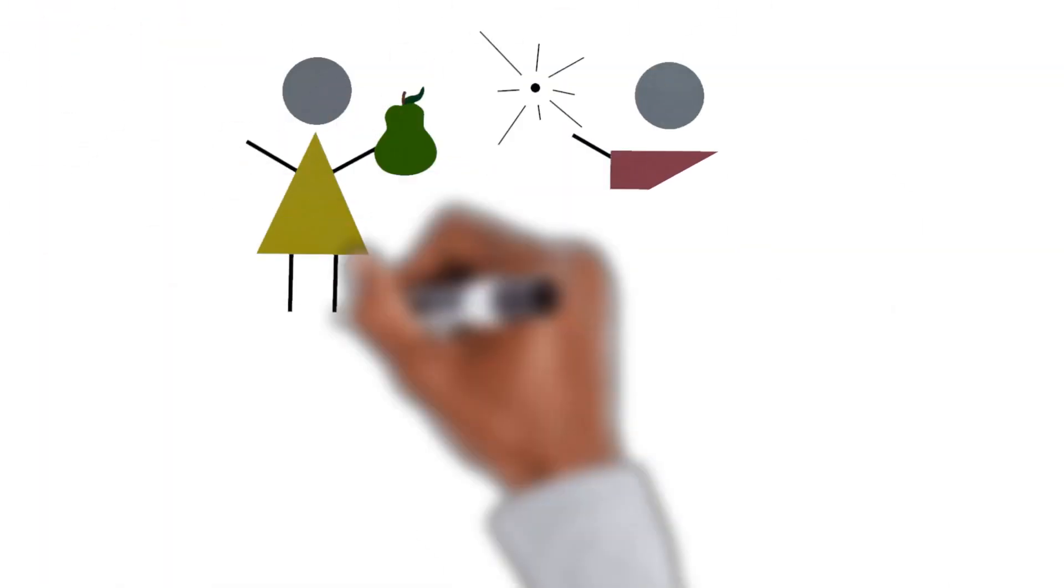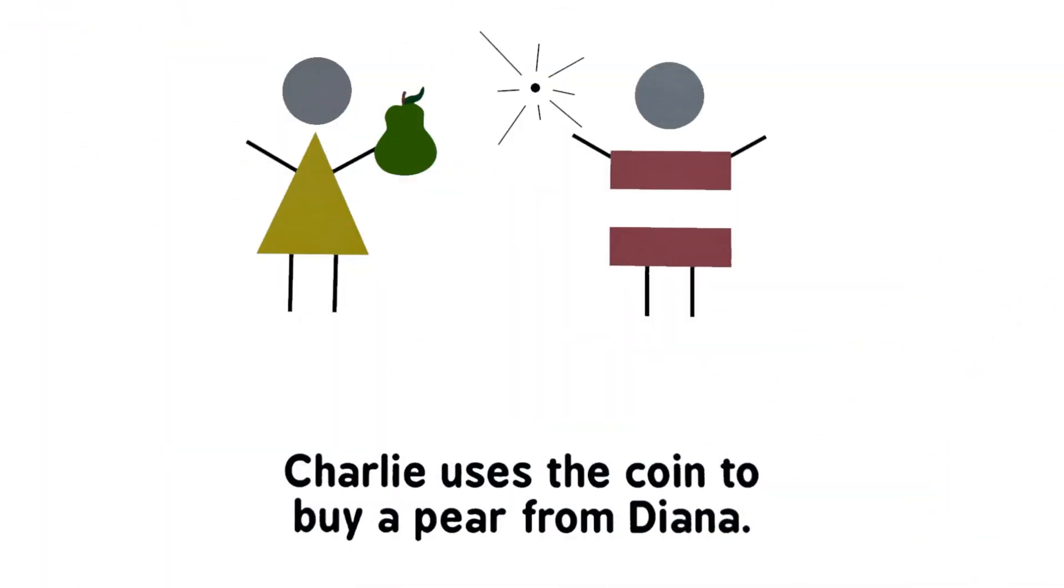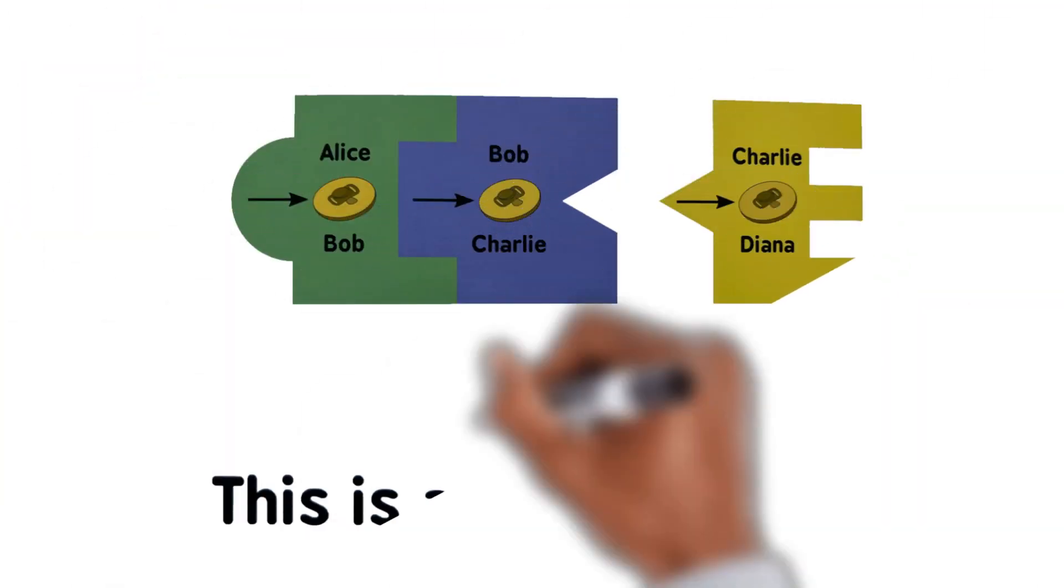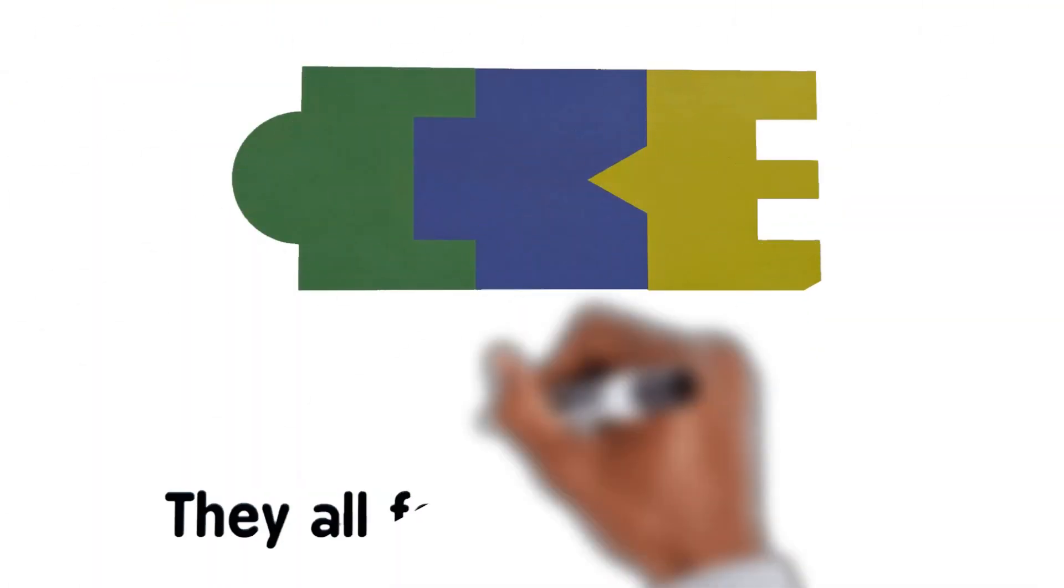Charlie uses the coin to buy a pair from Diana. This is another transaction. They all form the blockchain.